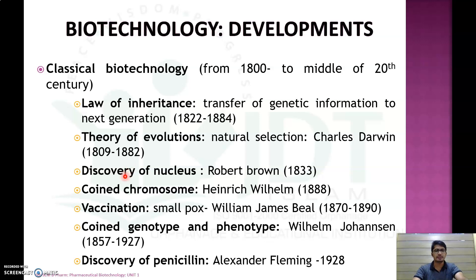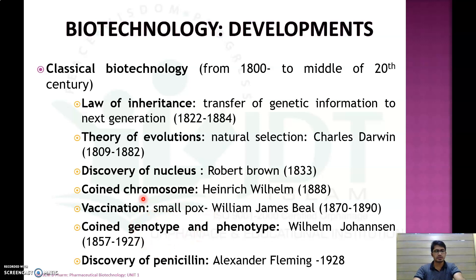In 1833, Robert Brown discovered the nucleus, which is the main genetic material in the cell. In 1888, Heinrich Wilhelm coined the term chromosome, which is present inside the nucleus and is responsible for the genetic constituents. Between 1817 and 1819, different vaccines were produced, with the important one being the smallpox vaccine by William Jenner. Between 1857 and 1927, the terms genotype and phenotype were coined — genotype indicates the total genetic composition of an organism, and phenotype is the expression of genes under different environmental conditions.